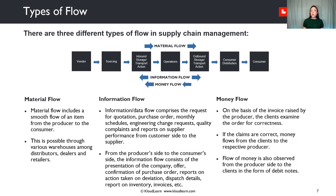From the producer side to the consumer side, the information flow consists of the presentation of the company, offer, the confirmation of the purchase order, reports on action taken on deviation, dispatch details, report on inventory, invoices, and more.